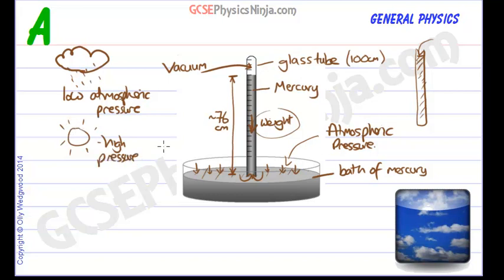So if it's a lovely day with the sun outside then there's more pressure pushing down on this bath of mercury, so the column of mercury will be higher than 76 centimetres. But if it's a rainy day then there's not so much pressure pushing down, and so this column will be perhaps less than 76 centimetres.